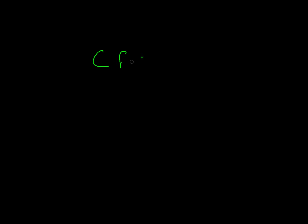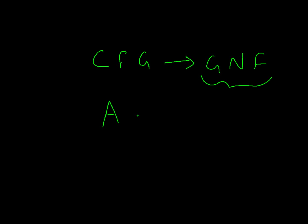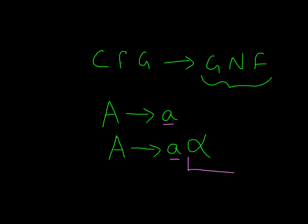I am Saud and in this video we shall convert a context-free grammar into Greibach Normal Form — CFG to GNF. In Greibach Normal Form, all productions are of the type: a symbol produces a terminal, or a symbol produces a terminal followed by a string of symbols. So in every single production, we have a terminal at the beginning, and we may or may not have one or many symbols following the terminal.